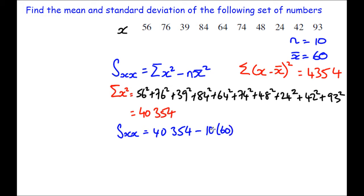And that once again leads to 4,354. So two ways there for us to calculate S_xx. Both of those totally valid.